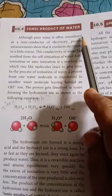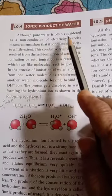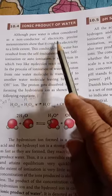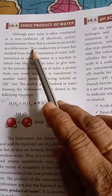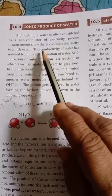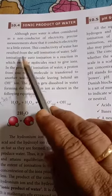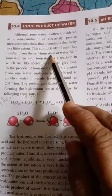I am going to teach you ionic product of water. Although pure water is often considered a non-conductor of electricity, precise measurements show that it conducts electricity to a little extent. This conductivity of water has resulted from self-ionization of water.